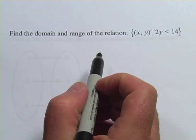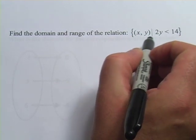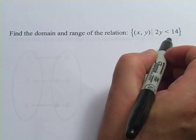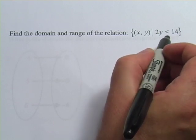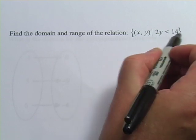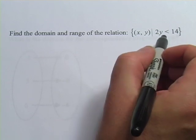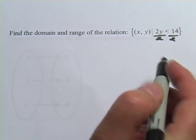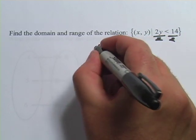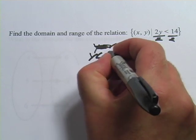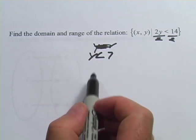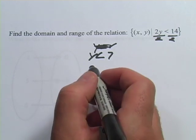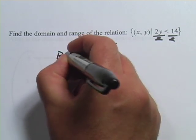Here's another one. It says find the domain and range of the relation, and gives the notation: x comma y such that 2y is less than 14. This is an inequality. The first thing you want to do when you see something like this is solve for y. Divide both sides by 2, and you get y is less than 7. Now that's something we can work with. This statement is already telling you what the range is — y is less than 7. So that's our range.